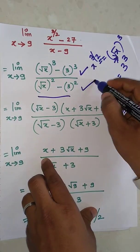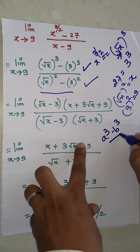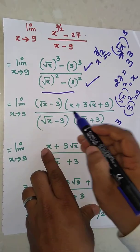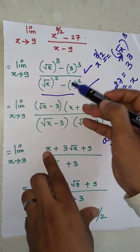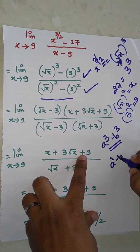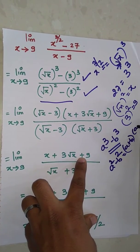Numerator: a cube minus b cube formula, a minus b times a squared plus ab plus b squared. Denominator: a squared minus b squared formula which equals a plus b times a minus b.